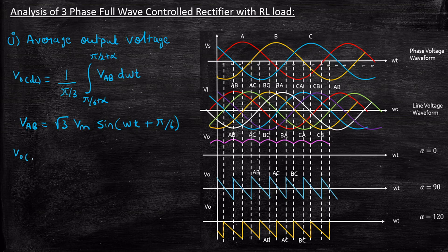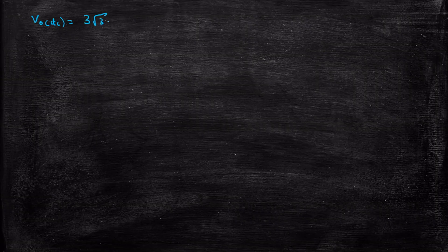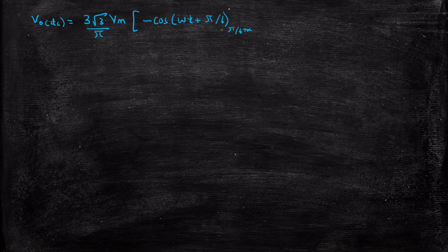Now substituting into the Vout DC expression, taking 3 in the numerator and root 3 Vm outside, you will be left with the integral from pi by 6 plus alpha to pi by 2 plus alpha of sine(ωt + pi by 6) d(ωt). Simplifying further, Vout DC is equal to (3√3 Vm / π) times the integral of sine, and the integral of sine is minus cosine. So we get minus cos(ωt + pi by 6), with lower limit pi by 6 plus alpha and upper limit pi by 2 plus alpha.